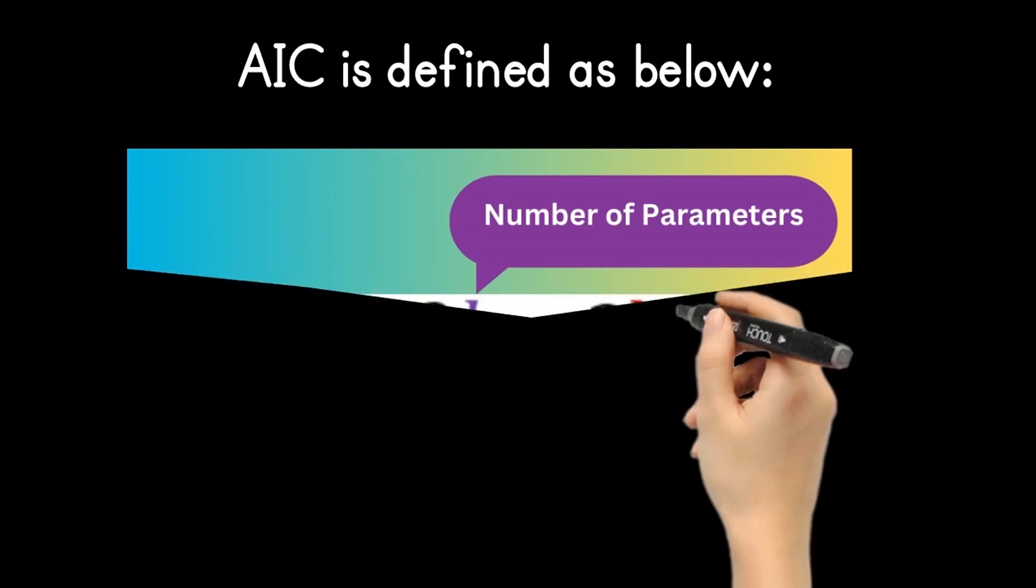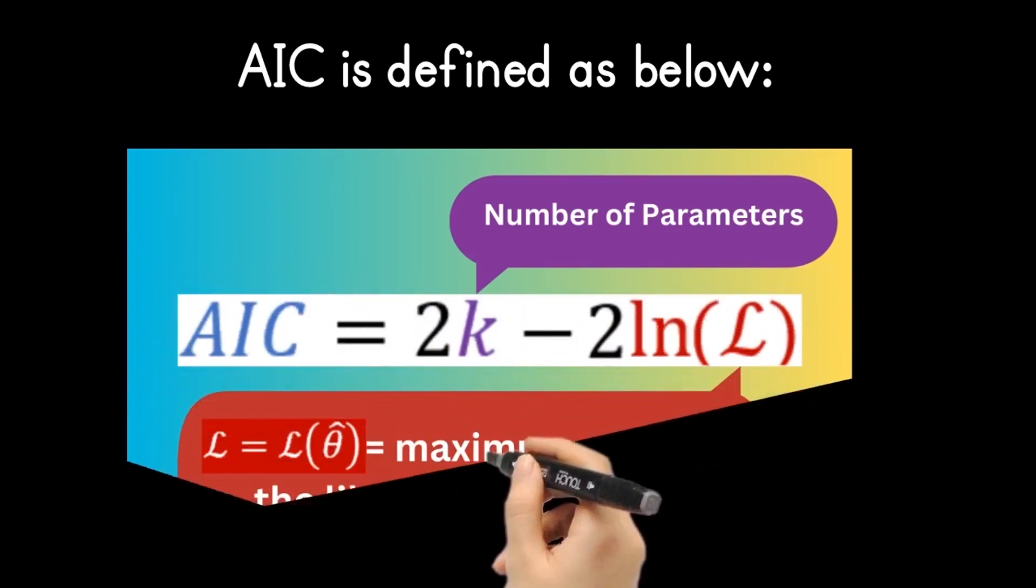AIC is defined as below. Here, K represents the number of parameters in the model, and L is the maximum value of the likelihood function related to the model.